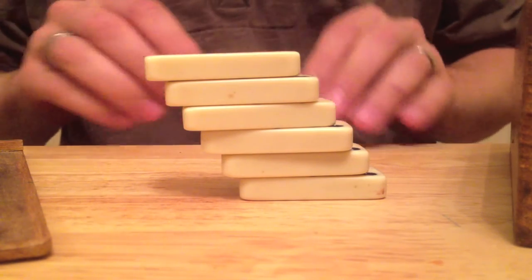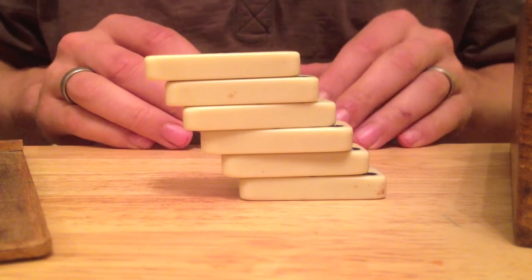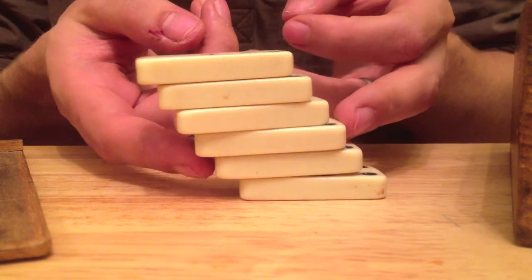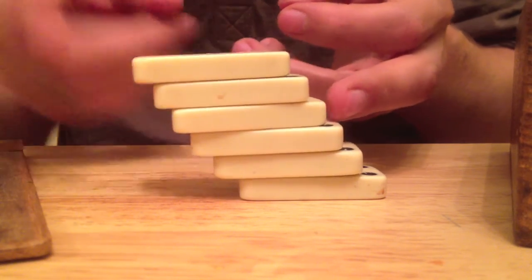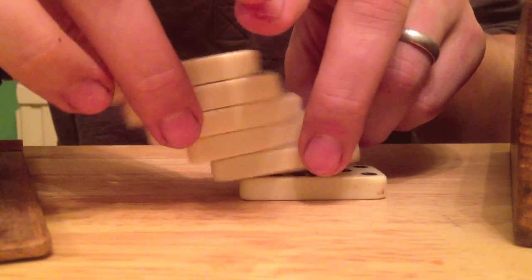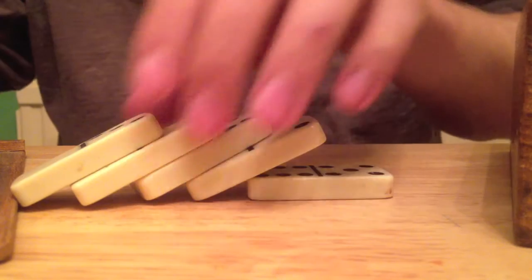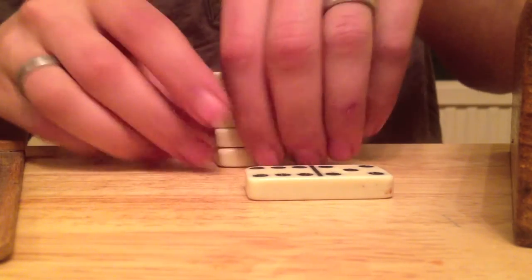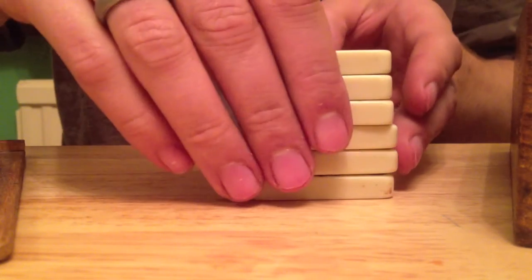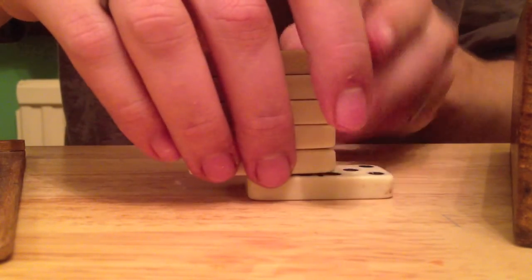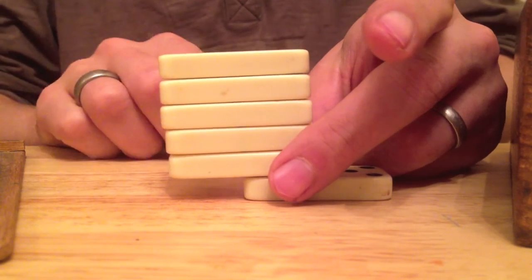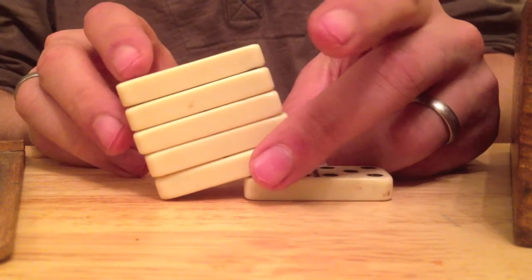So the first thing you'd try would maybe be let's separate them all by the same distance, see how far we can get. It falls over. So you may think that it would be impossible to actually get further than say half the length of a brick without the thing falling over.